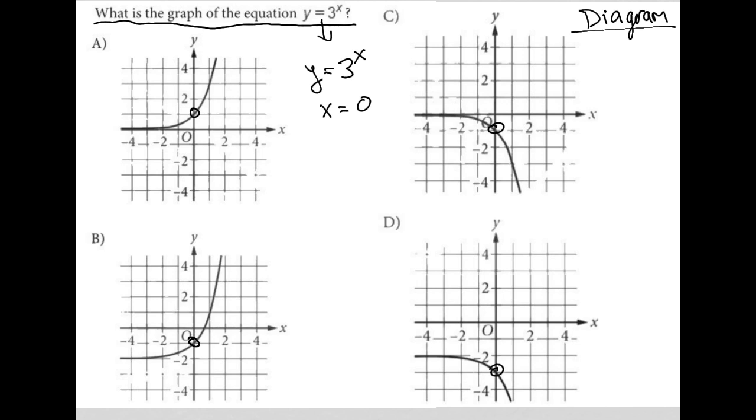So what happens when x is zero? Well, I could just plug zero in. Y equals three to the zero. Recall that anything to the zero power is equal to one. So that means when x equals zero, y should equal one. The only answer choice that gives that point is choice A.